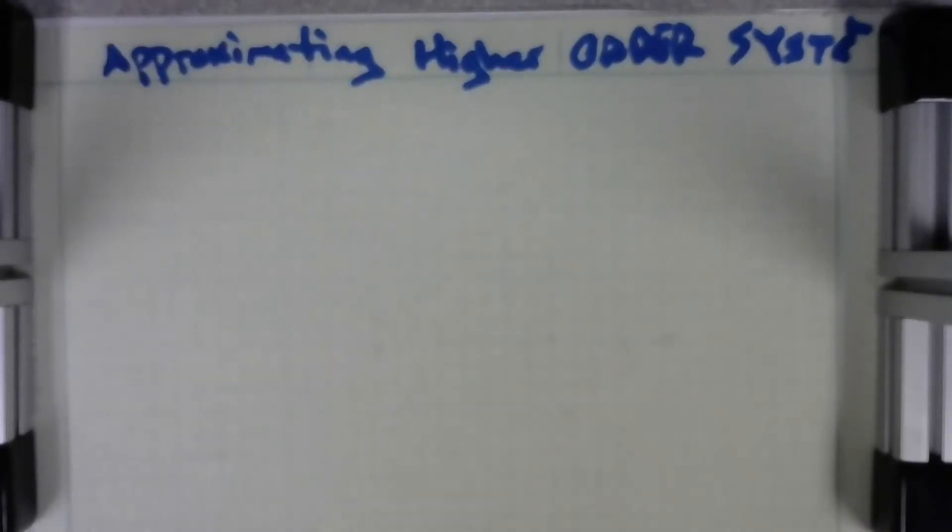All right, so what we want to do now is look at higher order systems. So far we have only dealt with first and second order systems. They're easy to handle, we can see what the coefficients mean - what is alpha, beta, what is the damping ratio, natural frequency, response frequency and all those things. But how about a third order system? It's not as clear, so how do you handle that?